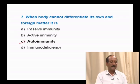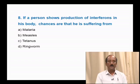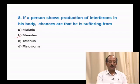Question number 8: If a person shows production of interferon in his body, chances are that he is suffering from — malaria, measles, tetanus, ringworm. Interferon is an antiviral protein secreted by virus-infected cells, giving protection to neighbouring healthy cells. Among the options, measles is caused by a virus (paramyxovirus). Hence, the infected cells produce interferon, and the correct answer is option B: measles.